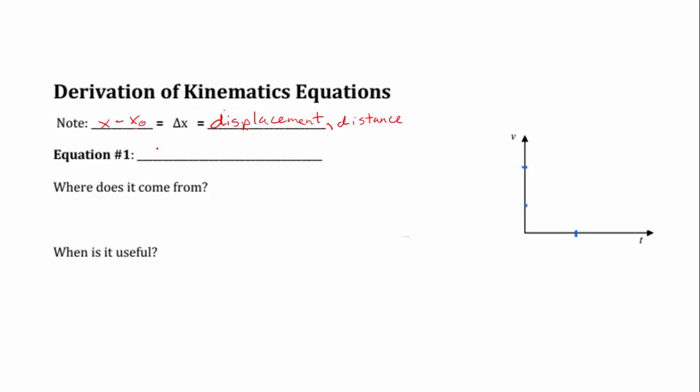So equation number one, we have already derived, is v equals at plus v naught. A little bit different than the ones we talked about in class, but we're going to talk about here so that we can derive the other ones. So where does this come from? And it comes from the equation of a line.